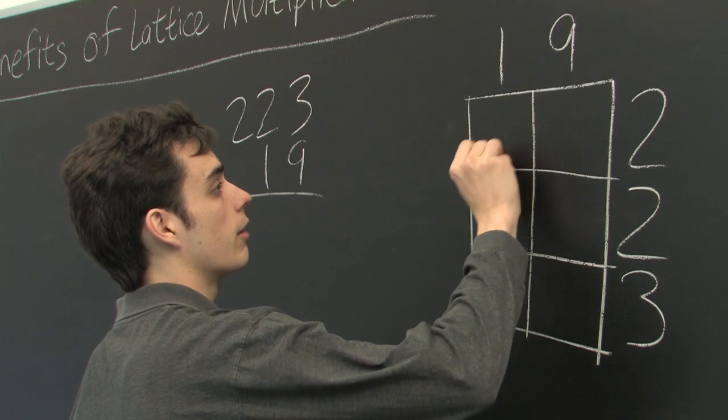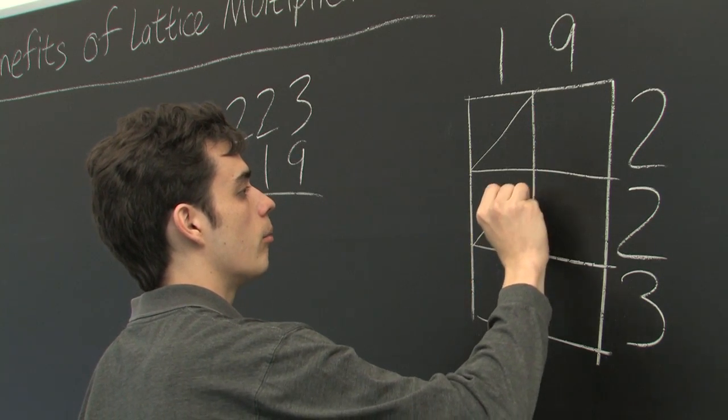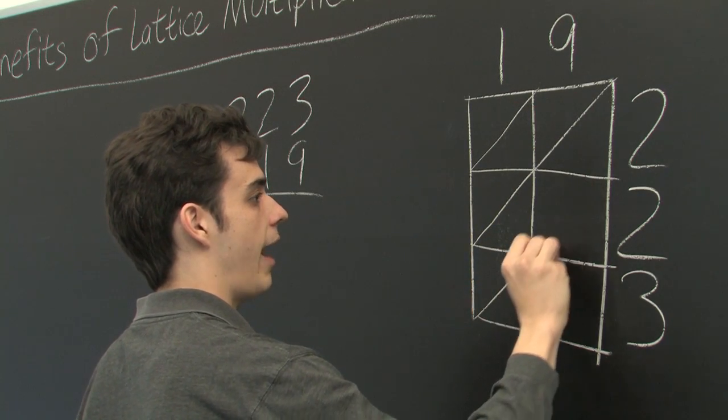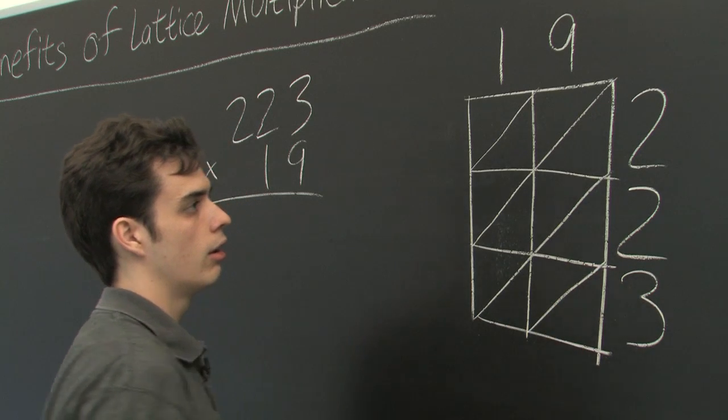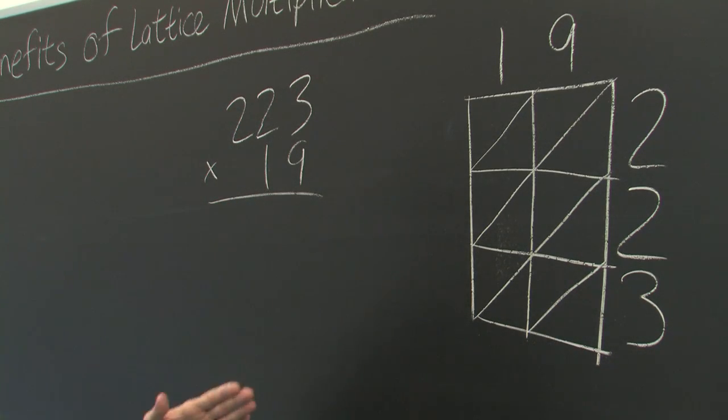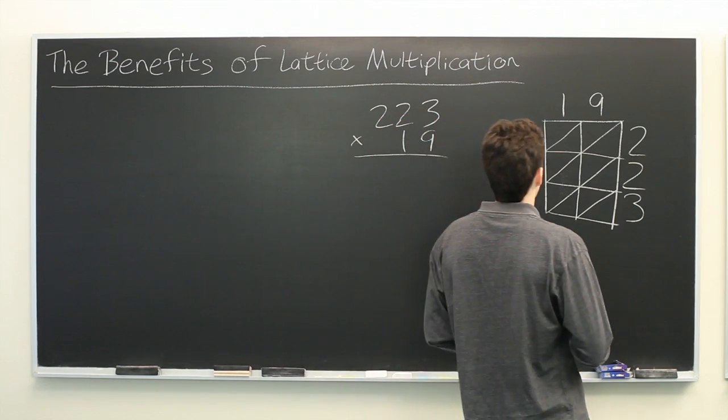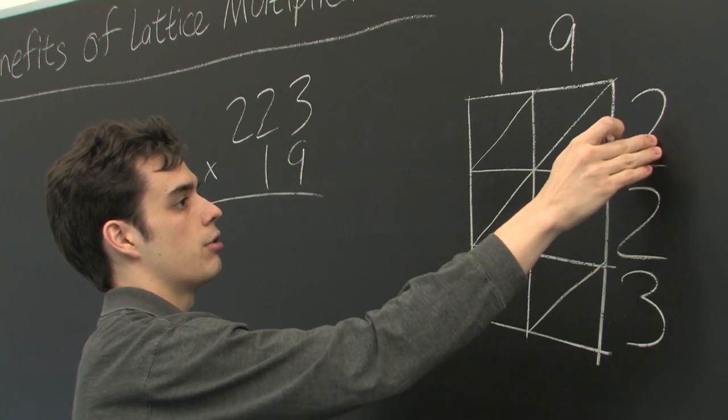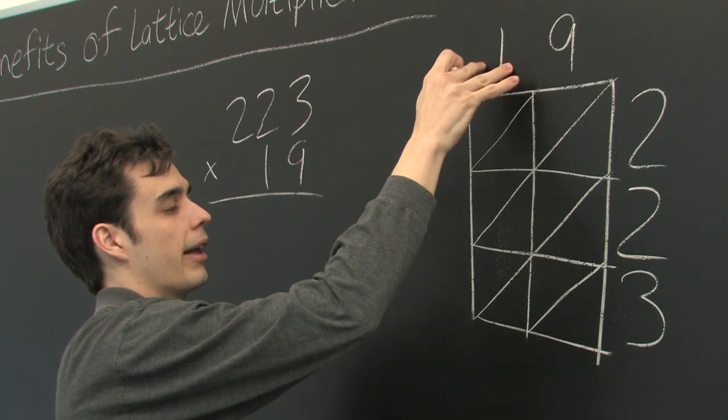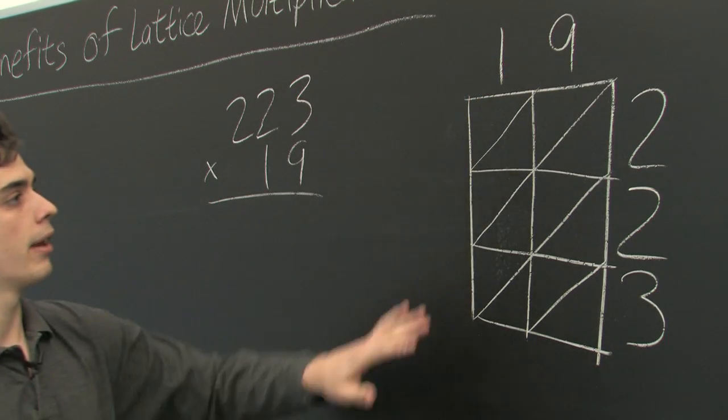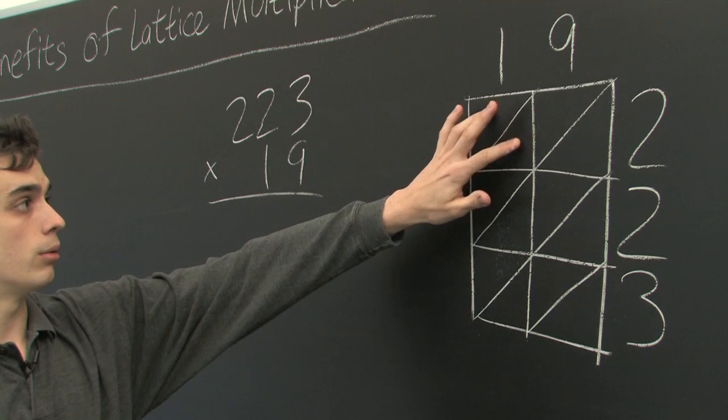We'll further divide our rectangle by drawing a diagonal line through each of our new squares, running from bottom left to upper right. Then what we do is we take each digit and multiply it by the digit along the top and write it into this box here.